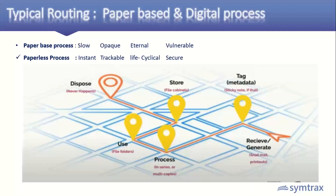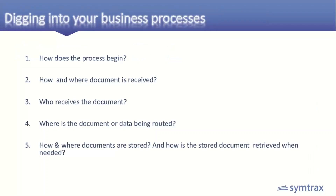In a digital process, you receive the vendor invoice through email, it is captured automatically, sent intelligently to the respective authority, the authority approves the document, the PO is merged automatically, and the entire set is stored in a DMS, file repository, or respective folder. This digital process is instant and transparent. In a paper-based process it moves with the speed of people, but in a paperless process it moves with the click of a button.